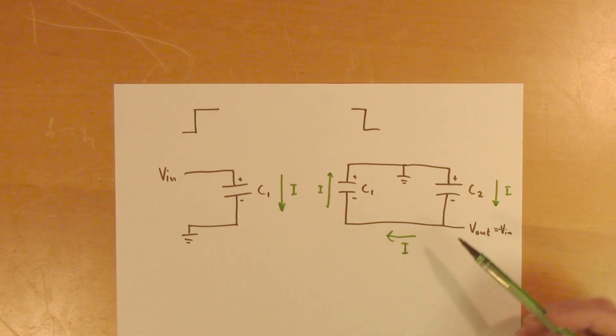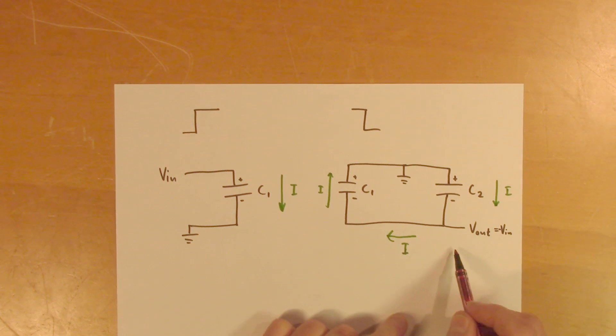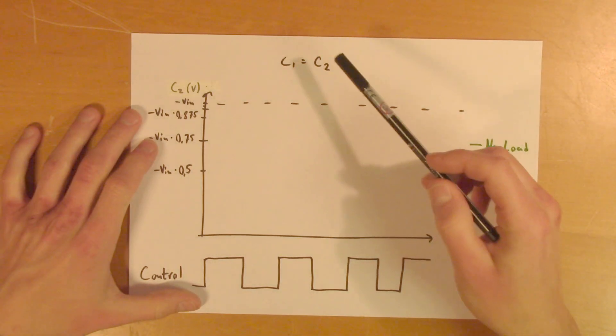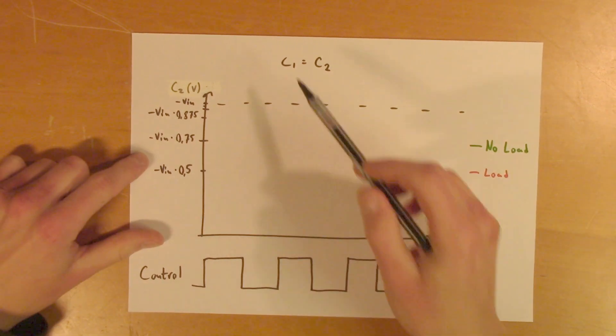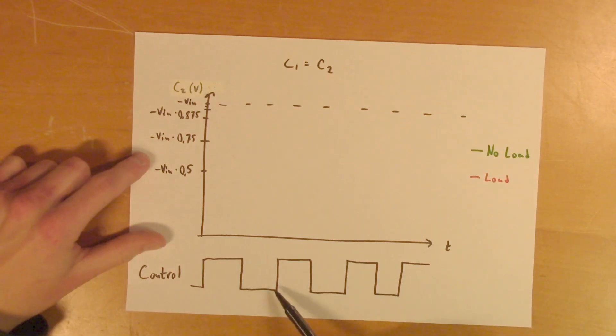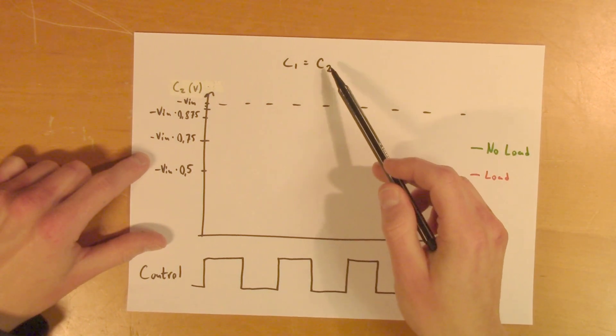Now, of course, if you use this for anything, that means that you will draw some current from C2 as well to the output load. So let's assume that C1 and C2 has the same capacitance. In the first part of the cycle, C1 is charged. And in the second part of the cycle, some of the charge from C1 is transferred to C2.